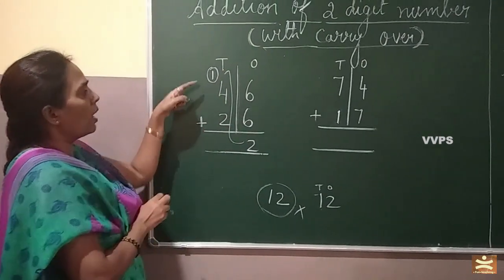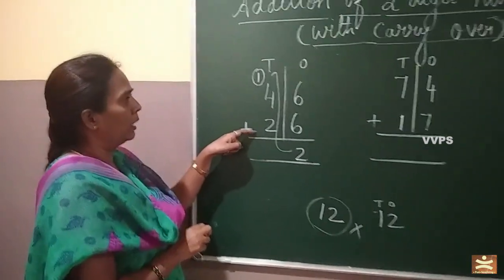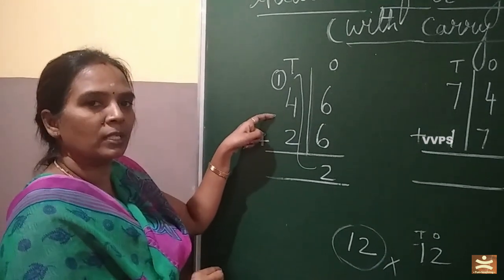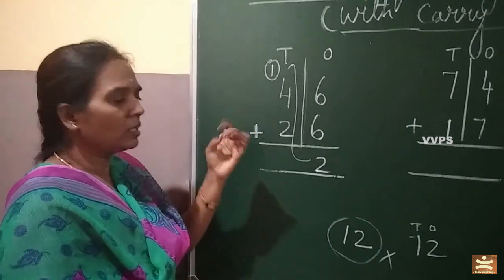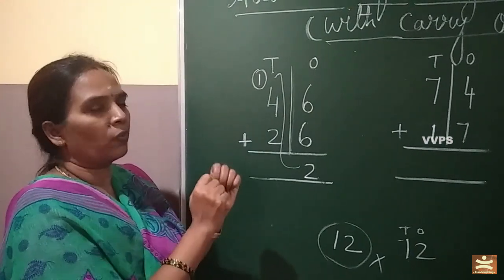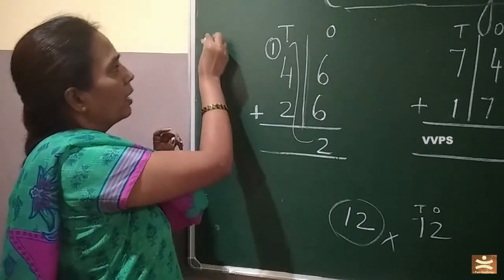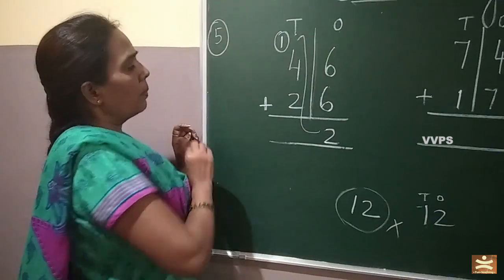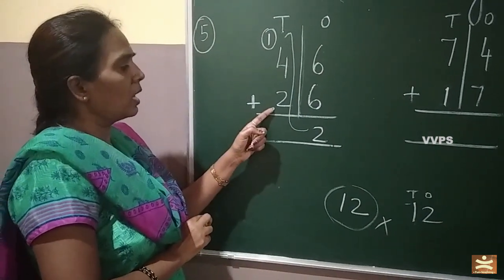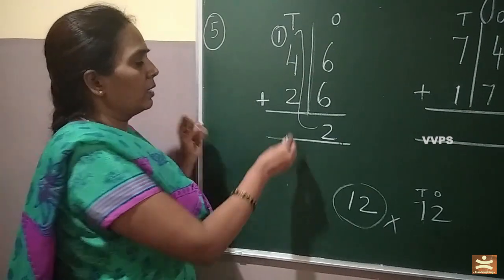So now you have 1 plus 4 plus 2. One in the mind, four on the fingers. After one: two, three, four, five. You have five in the mind children. Five in the mind, two on the fingers. After five: six, seven.